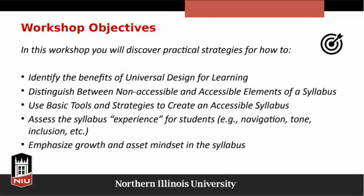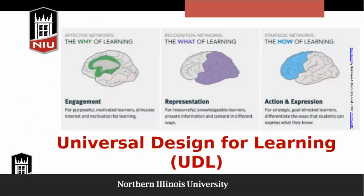We're just going to do a brief overview of universal design for learning. We've offered entire workshops on UDL and it's really too much to cover in this workshop. But this is the basic three for UDL: the why of learning, the what of learning, and the how of learning. The why covers engagement for purposeful, motivated learners — we want to stimulate their interest and motivate their learning. The what of learning is representation for resourceful, knowledgeable learners — we want to present information and context in different ways. And then the how of learning is action and expression for strategic, goal-directed learners — we want to differentiate the ways that students can express what they know, giving them multiple ways to demonstrate their learning.